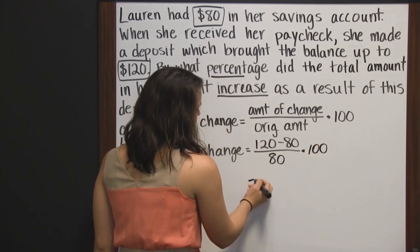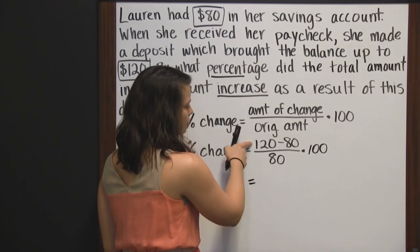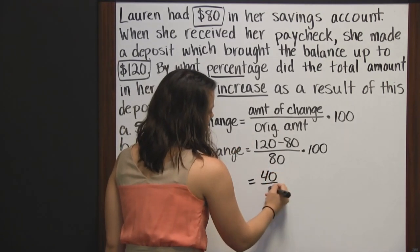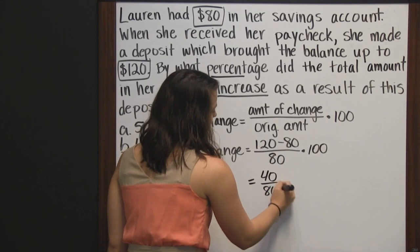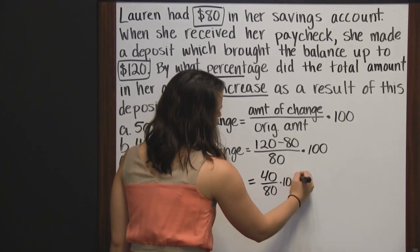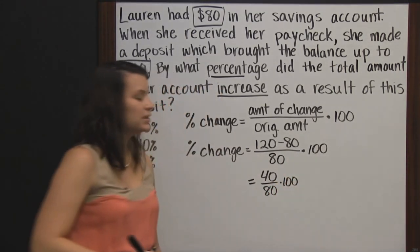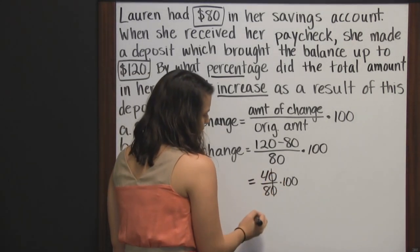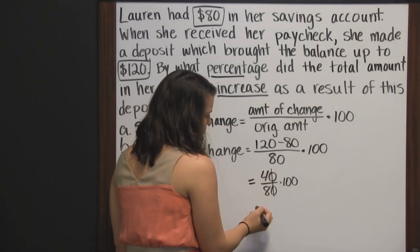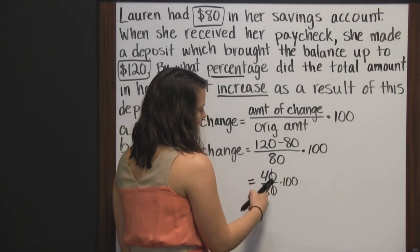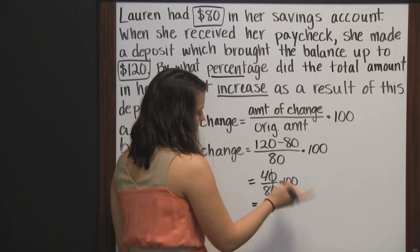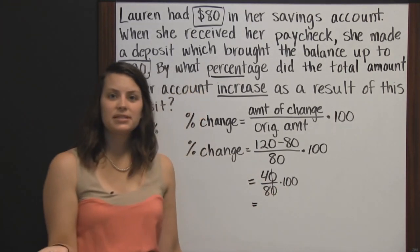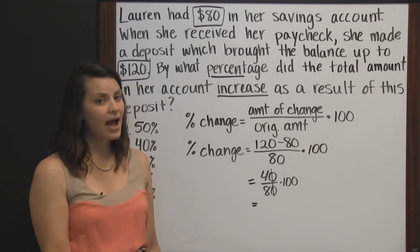So the percent change is 120 minus 80, which is 40, divided by 80, times 100. To simplify this, we can first cancel a zero. So we have 4 eighths times 100, and 4 eighths can be simplified to 1 half.